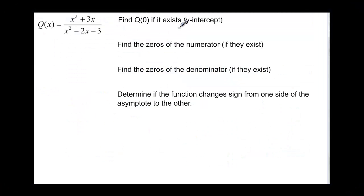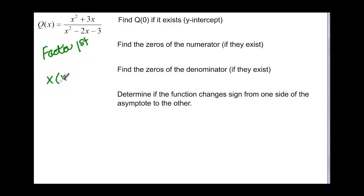We're going to try to graph this function and we need to find some different things about it. The first thing you want to do is find the y-intercept, but a good way to do that — because of all the other things we want to do — is to factor first. Nice things happen if you factor first. So on the top we have x times (x + 3), and on the bottom we have (x − 3) and (x + 1), which gives us a minus 2.